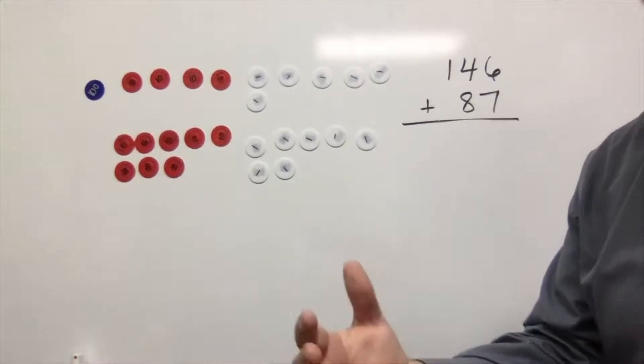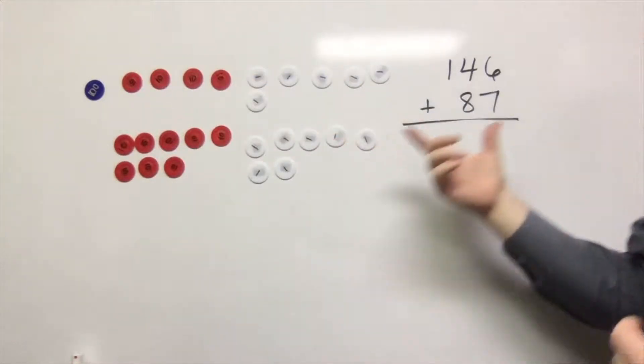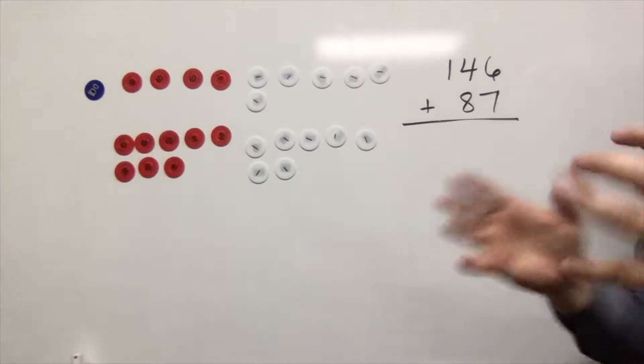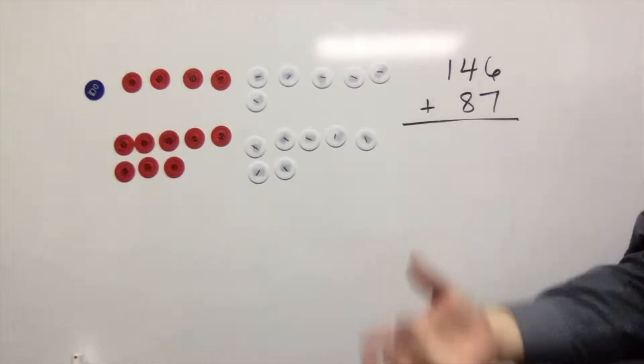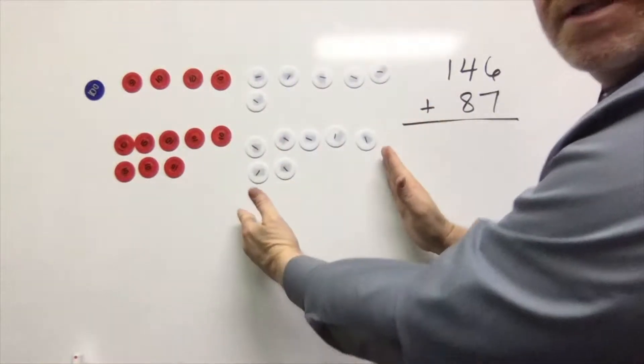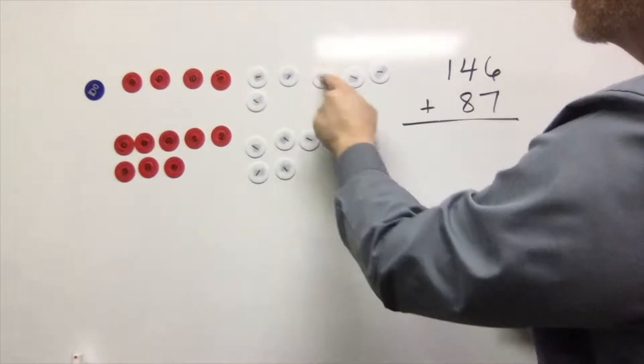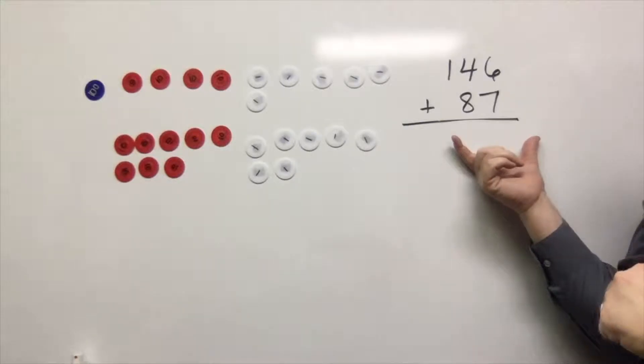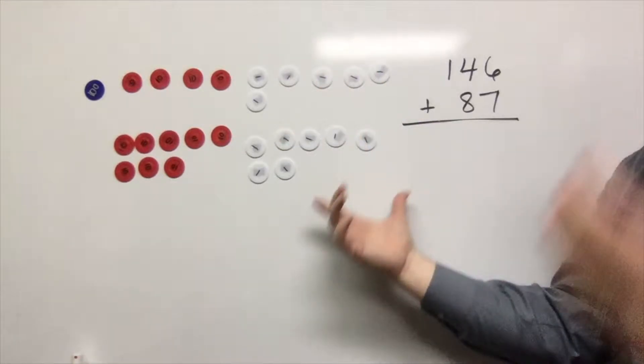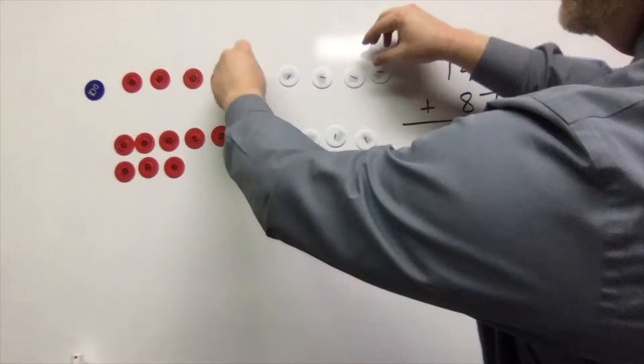If I want to show the concrete and the abstract at the same time, I can record my thinking over here as we work. So here we go. We're going to take a look and we're going to see that we have, I don't know how many ones, one, two, three, four, five, six, seven, eight, nine, ten, eleven, twelve, thirteen, because of course we're adding here.